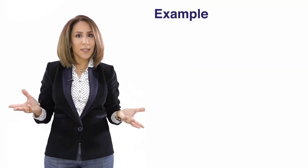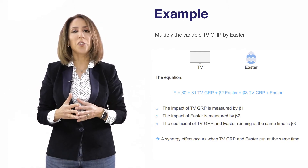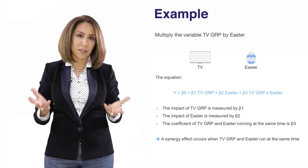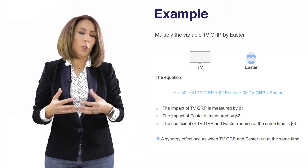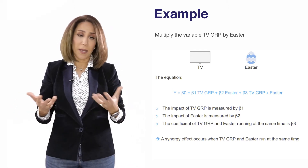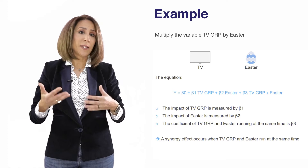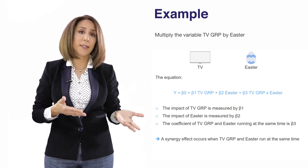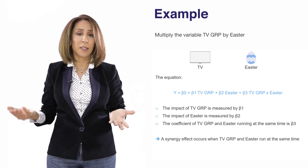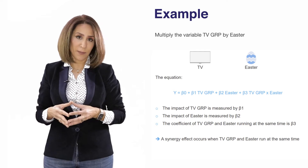In this example we explore further the interaction between Easter and TV activity. We apply the Multiply processor by taking the Easter variable and multiplying it by the TV activity to obtain the interaction effect.